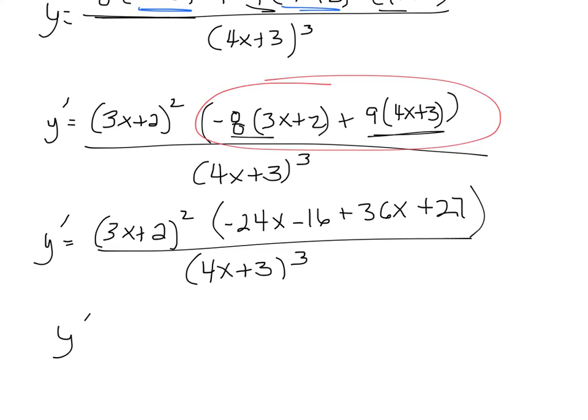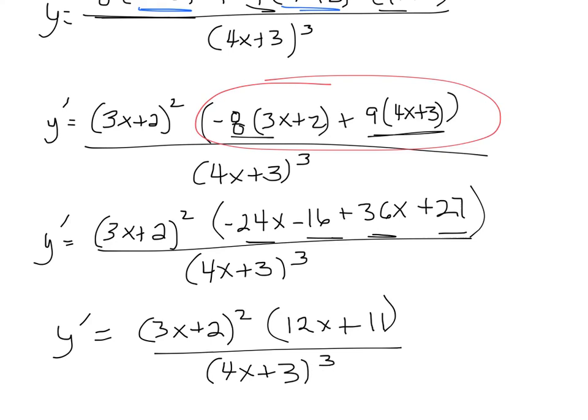cubed. And finally, collecting like terms, I'm going to get 12x plus 11, all over (4x plus 3)³, and that's my final answer.